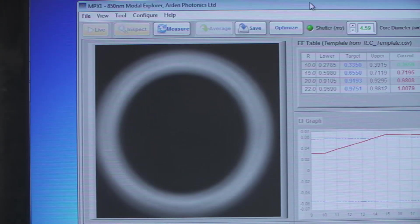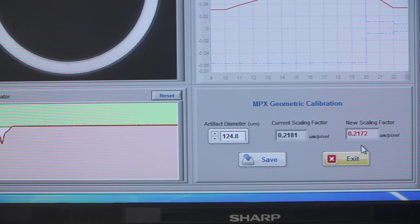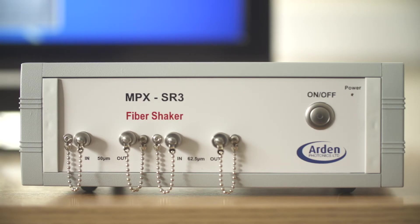If you want to measure coherent sources such as VCSELs or Fabry-Perot lasers, you may need to average for several seconds while shaking the fiber to break up speckle patterns. In this case, you can use the optional Fiber Shaker.